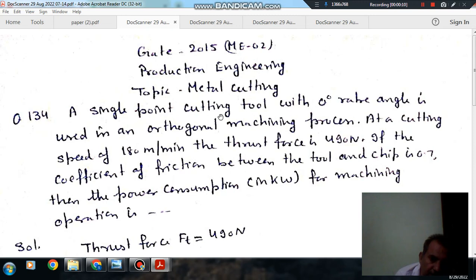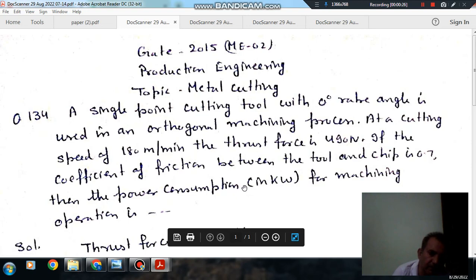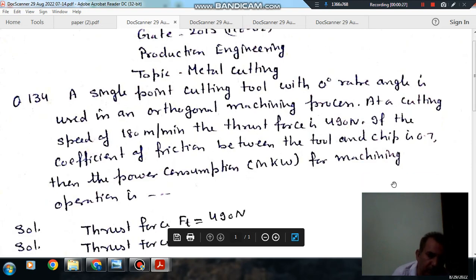A single point cutting tool with 0 degree rake angle is used in an orthogonal machining process. At a cutting speed of 180 m/min, the thrust force is 490N. If the coefficient of friction between the tool and chip is 0.7, then the power consumption for machining operation is.